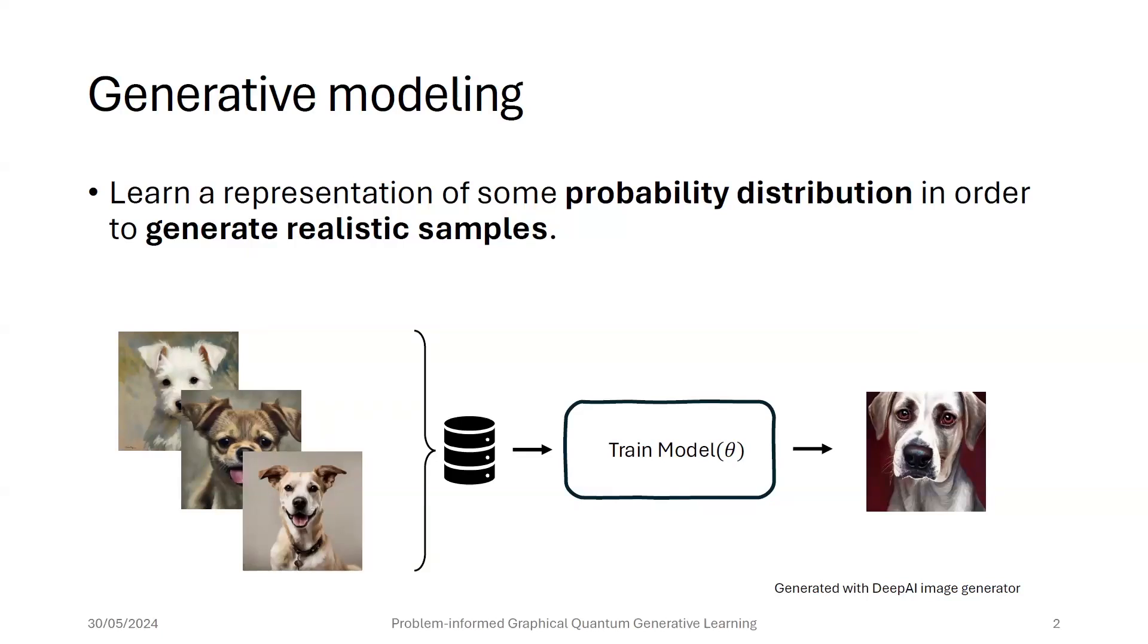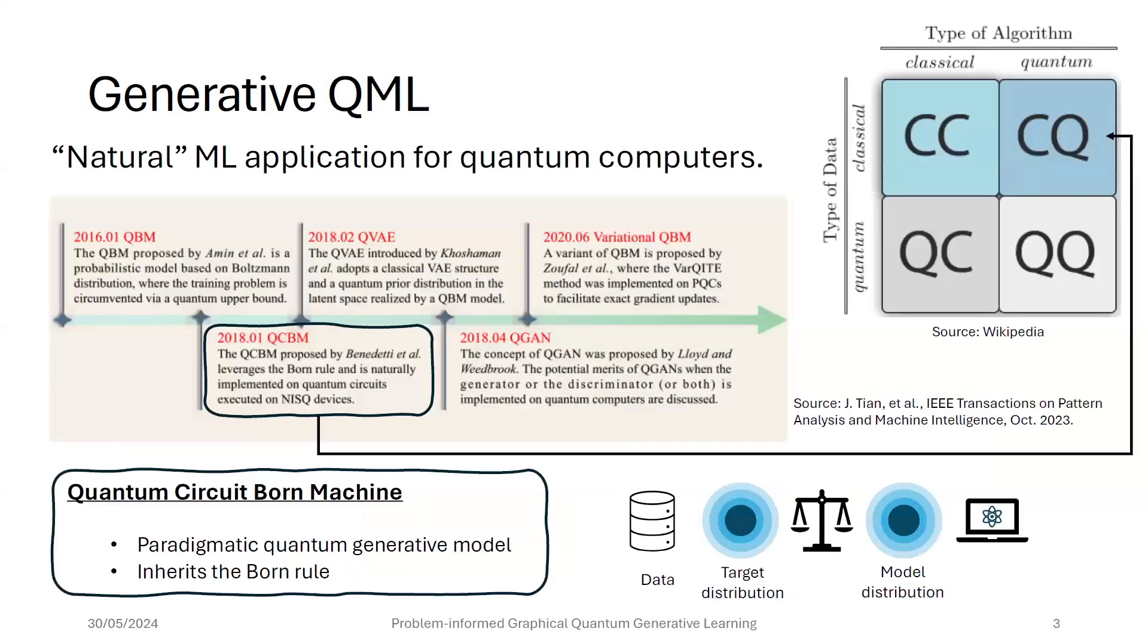To start from the end, what I mean by generative learning is the task of learning a representation of some unknown probability distribution in order to generate realistic samples. We are usually given a set of training samples, and from those, we want to learn that representation of that very complex probability distribution so that we can use that to generate pictures, for example, that resemble the training set.